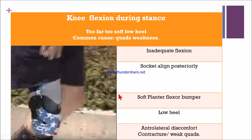For inadequate knee flexion, remember the opposite mnemonic: 'too far, too soft, low heel.' Too far posteriorly aligned socket, too soft a plantar flexion bumper, and a low heel. The most common cause is quadriceps weakness or contracture. Lateral discomfort or contracture with weak quads also contributes.